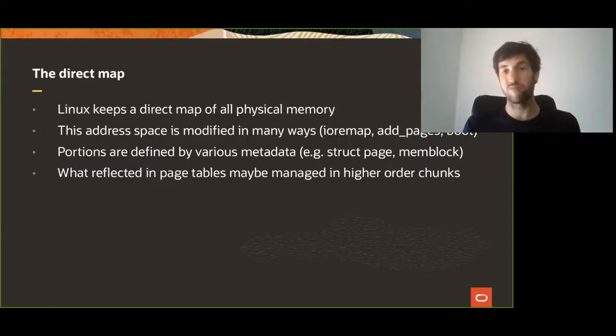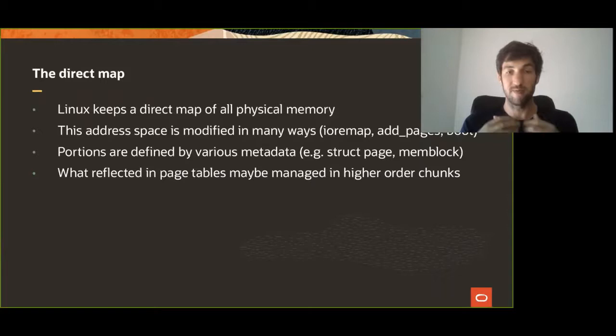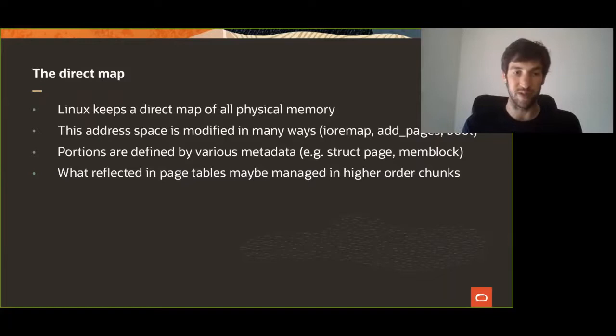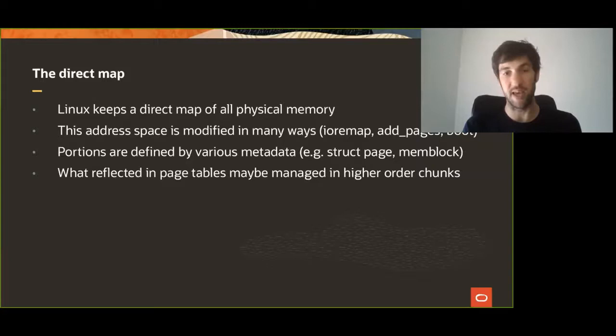Portions of this address space may be backed by various kinds of metadata which track different things. There are different granularities. We have memblock, which describes blocks of memory. You have the underlying memory model — so vmemmap — which looks like a single contiguous region where each individual address points to struct pages.